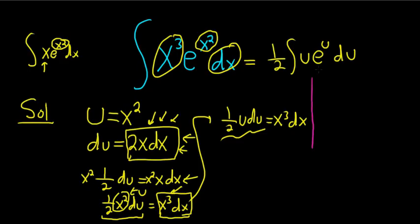So tabular works whenever one piece after repeated differentiation is eventually 0 and you have to be able to integrate the other piece. So you pick one to differentiate, that will be u,